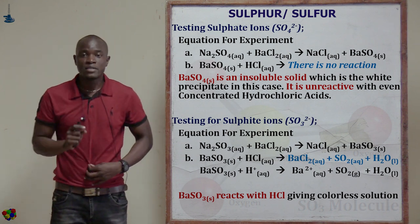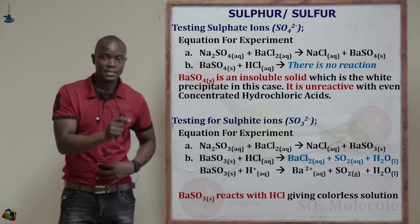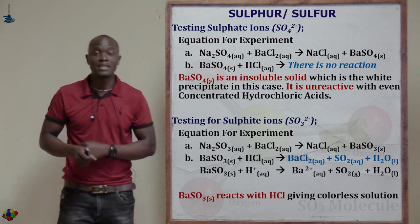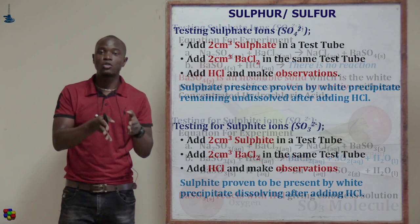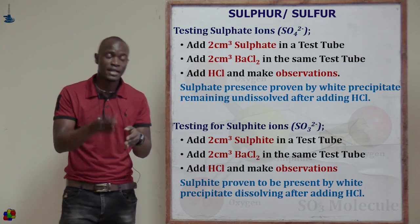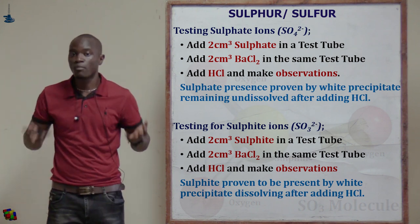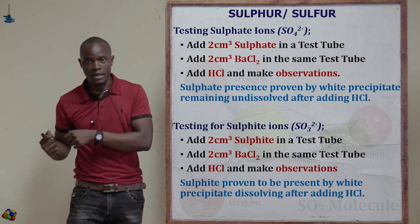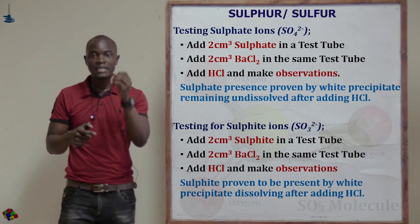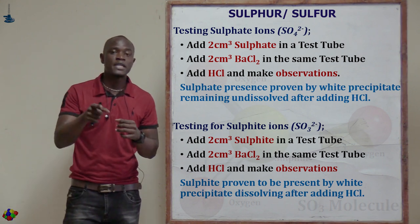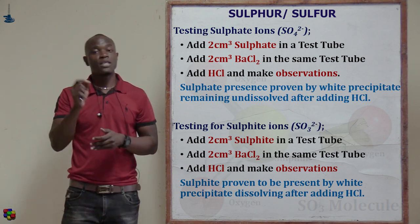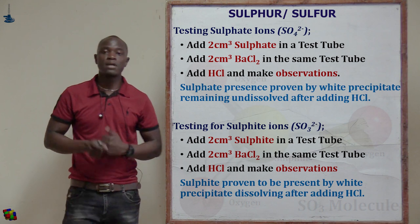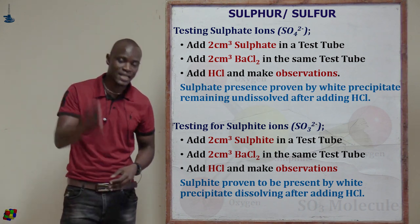Anytime in an exam you see barium ions or barium something, always remember there might be a test for sulfate or sulfite ions. Sulfate ions will not dissolve in an acidic medium — whether you use hydrochloric acid or nitric acid, the white precipitate of sulfate ions persists. But sulfite ions will dissolve in an acidic medium, giving a colorless solution. That is how you differentiate between sulfate ions and sulfite ions in the laboratory.